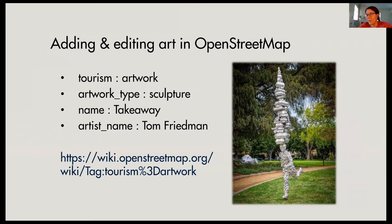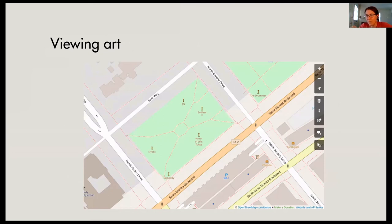The second most important is what type of artwork it is - sculpture, mural, mosaic; they're all fairly intuitive. Then the next two are really nice to have: giving credit to the artist and saying what the name of the art is. This is where your sleuthing skills come in - in this case it's called Takeaway, and the artist's name is Tom Friedman. Within just the default base map, if you zoom in far enough you'll see pieces of public art with a little twisted column icon for sculptures and the artwork name underneath.